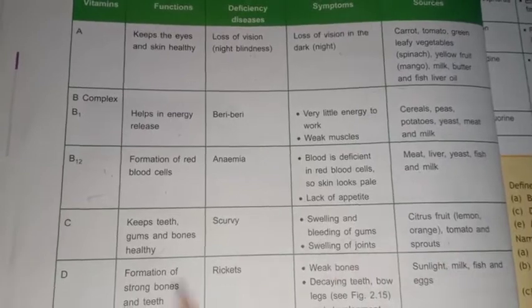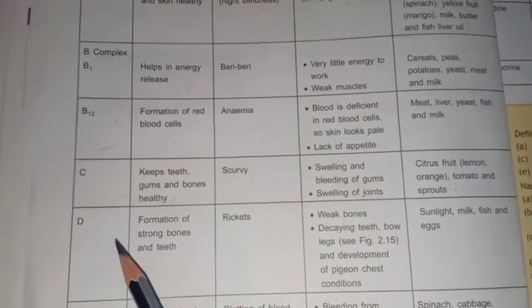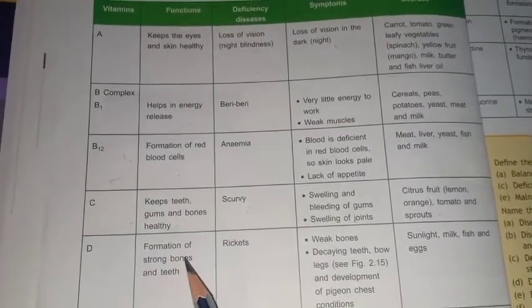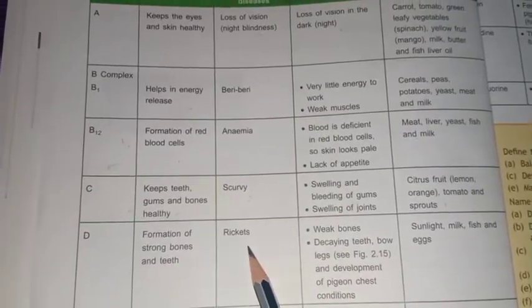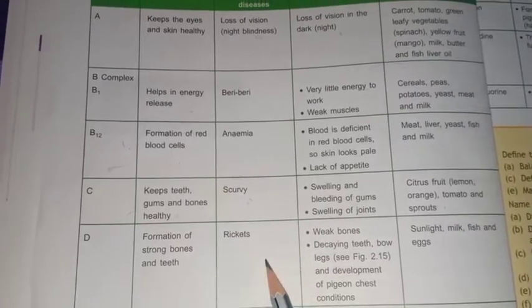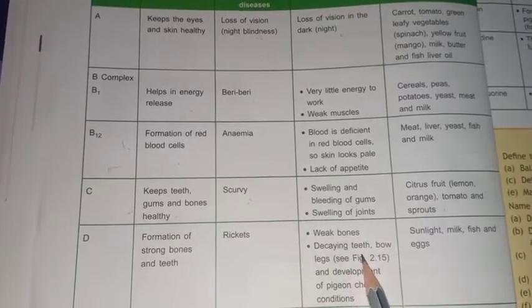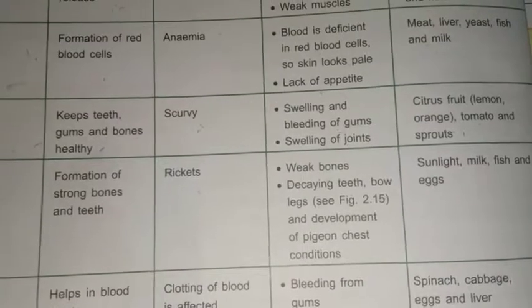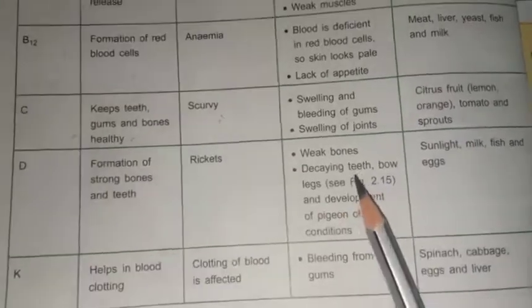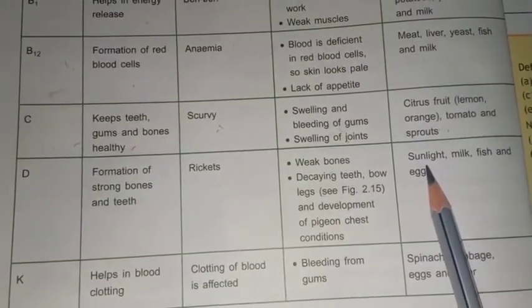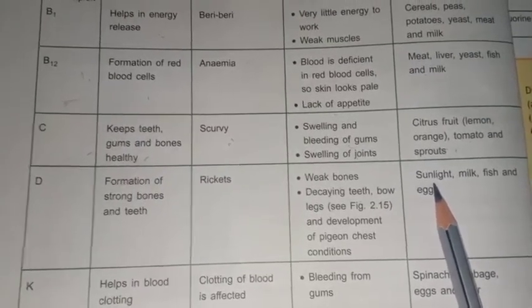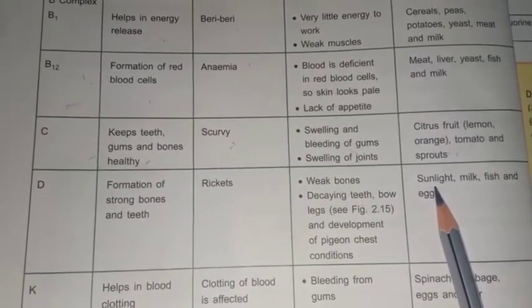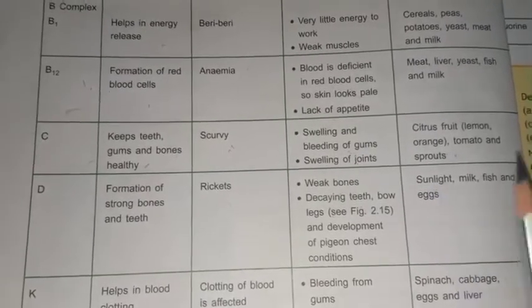Next we have Vitamin D. The function of Vitamin D is the formation of strong bones. Its deficiency causes rickets. Symptoms are weak bones, teeth decaying, and bow legs — a condition in which legs are bent outward. Sources of Vitamin D include sunlight, which is a rich source. Sitting in sunlight for 15 to 20 minutes gives a sufficient amount of Vitamin D. Other sources are milk, fish, and eggs.